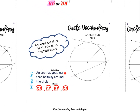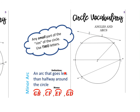Let's differentiate between minor arcs and major arcs. Minor arcs are the small arcs — any arc that is less than halfway around the circle. The arc GB is considered a minor arc because that's less than half of the circle. We name minor arcs using only two letters. CF is also a minor arc, EF is a minor arc, and GD is also a minor arc. I'm going to highlight EF as my minor arc.